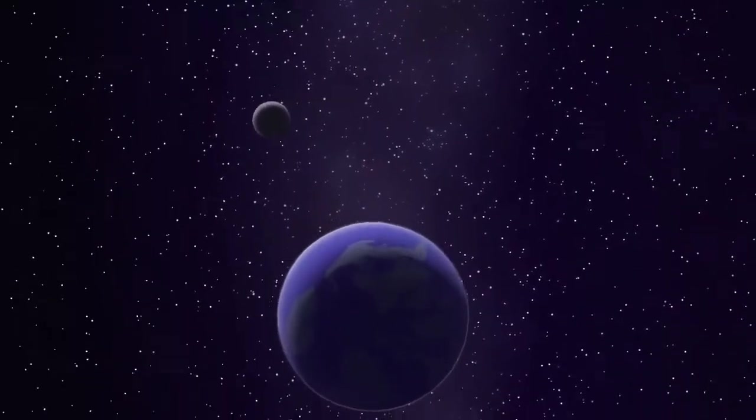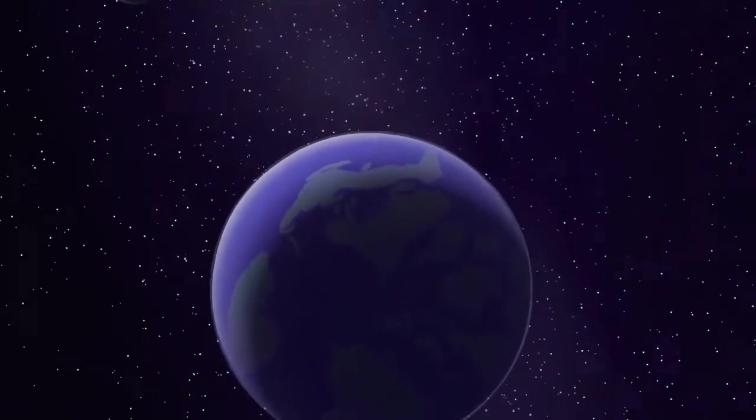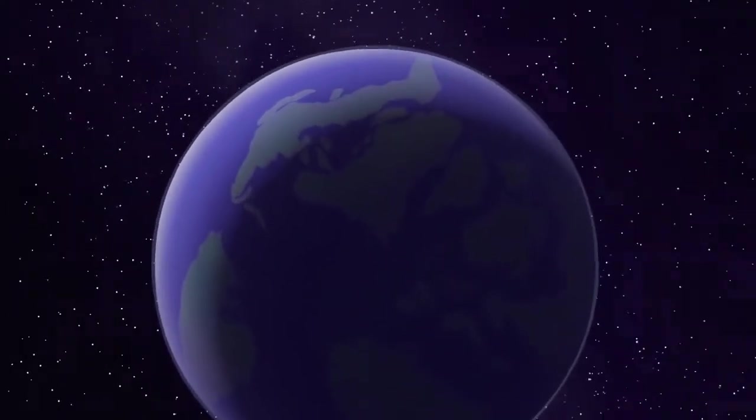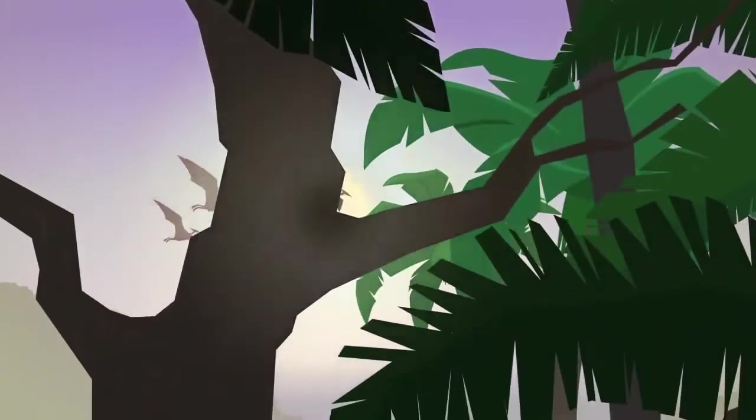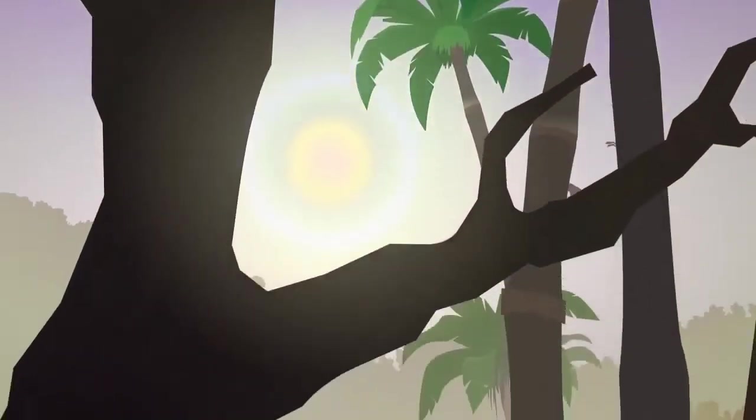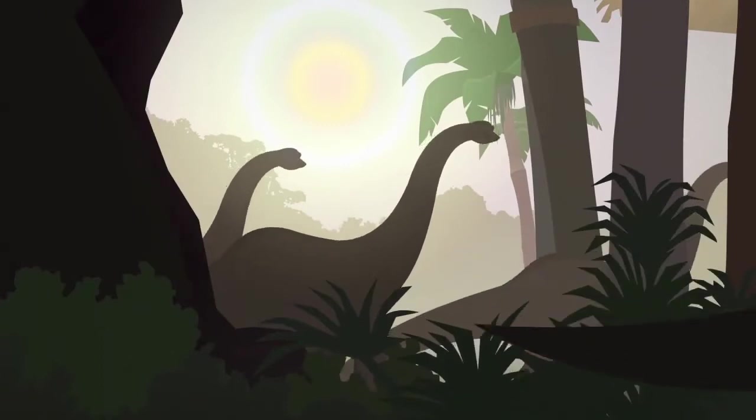This is the Earth, as it looked 90 million years ago. Geologists call this period the late Cretaceous. It was a time of extreme global warming, when dinosaurs still ruled the planet.